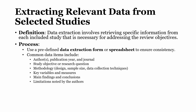Common data items include author, publication year, and journal — so you can have three columns for those. Additional columns can cover study objectives and research questions, giving you two more fields.